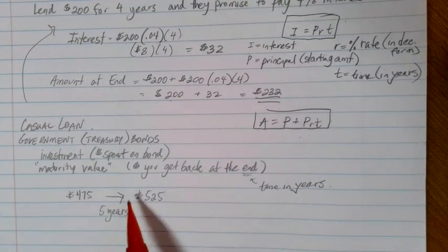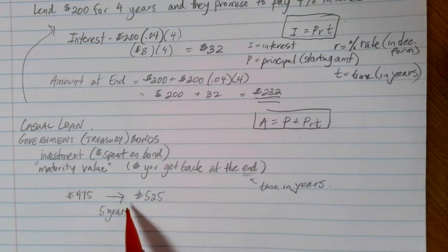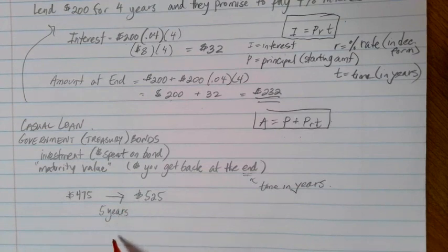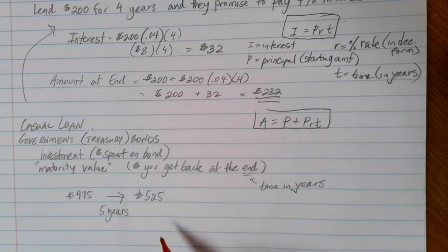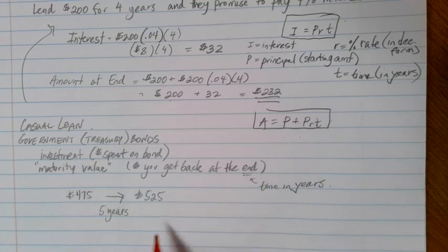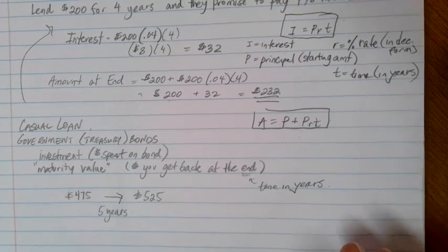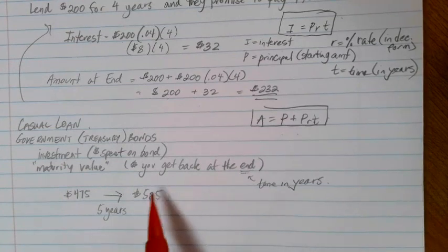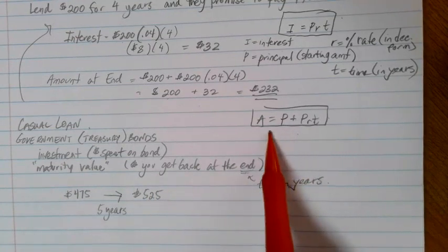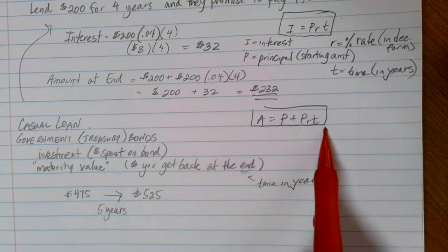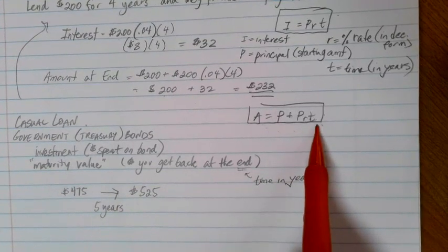In an example like this, notice that we are not given a percentage rate. You may want to know how this investment compares to other investments. In which case, you really need to look at what the interest rate is to see, is this bond going to be a good way to spend my money, or maybe do I want to put it in a savings account or a money market account or the stock market? So to do that, we need to know what the rate is, and we can calculate it from this formula because we have all the other pieces of information.